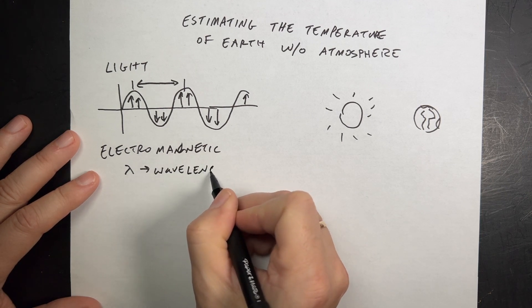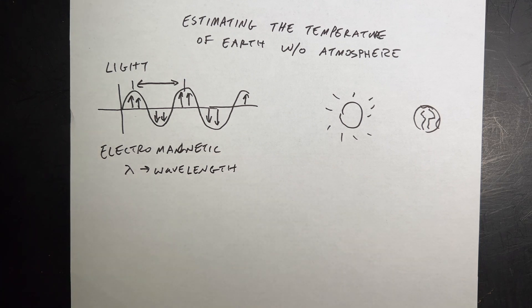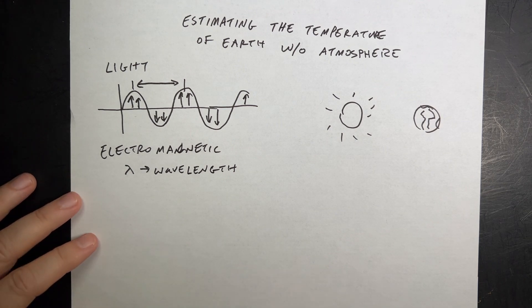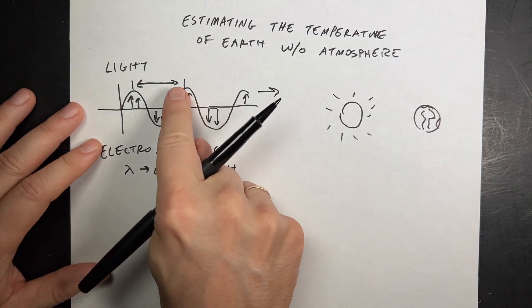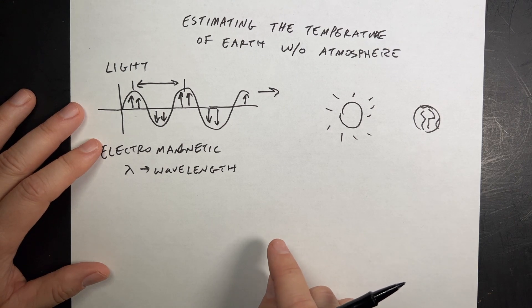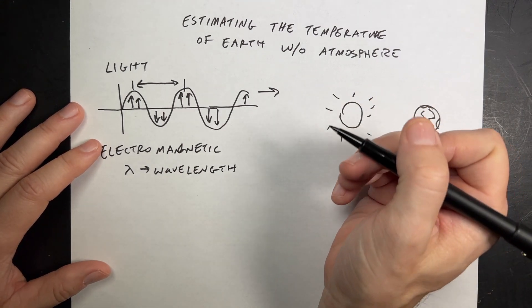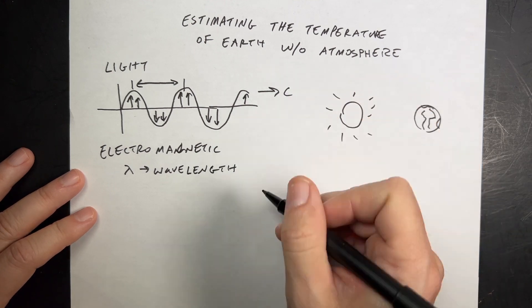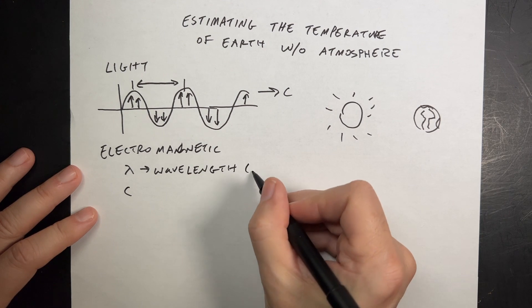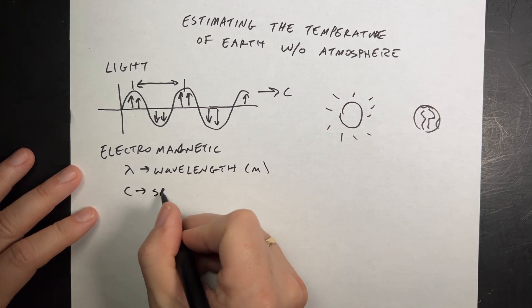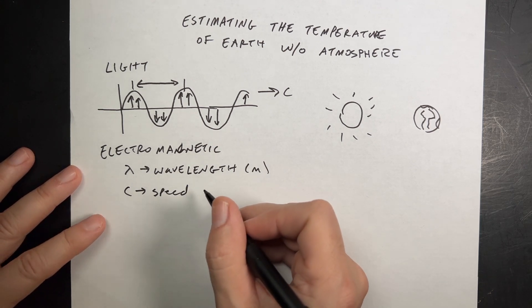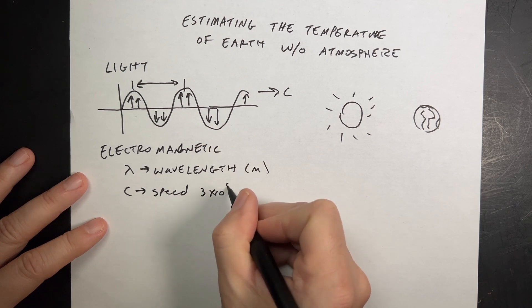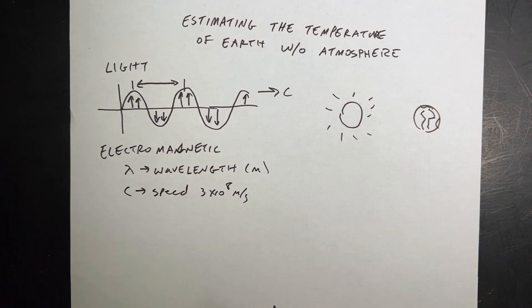The wavelength is important for a couple of reasons — one way we describe the difference between different electromagnetic waves is by wavelength. The next property is wave speed: how fast a peak travels. For all electromagnetic waves, this speed is constant — we call it C. Wavelength is measured in meters, and C, the speed of light in a vacuum, is 3 times 10 to the 8th meters per second. That's really fast and a really important constant.